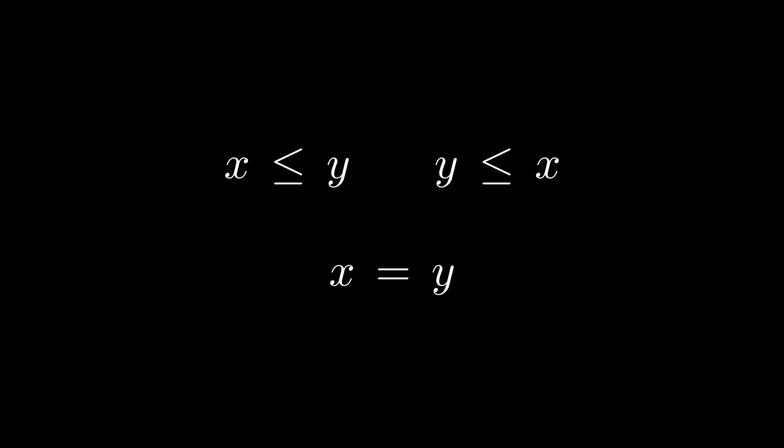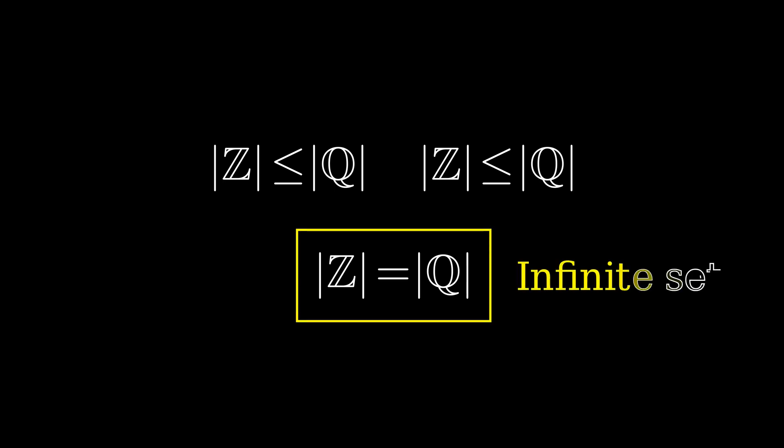Today I'd like to talk about a vast generalization of this fact. Suppose x and y aren't just numbers, but infinite sets, like the set of all integers, or the set of all rational numbers. If we can show a similar relationship about their sizes, that they are both less than or equal to one another, can we conclude that they actually are the same size?